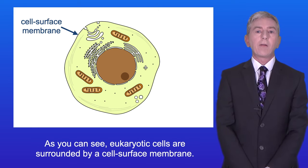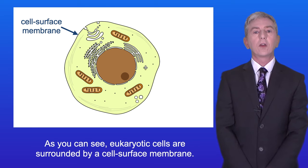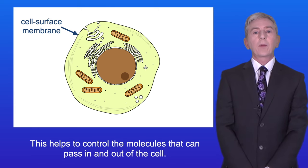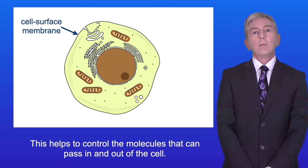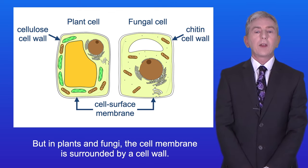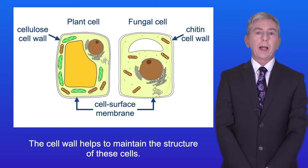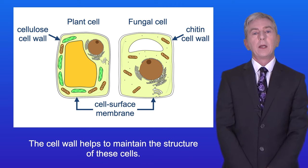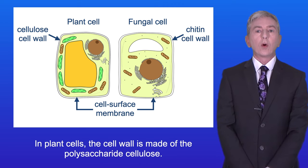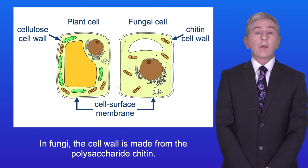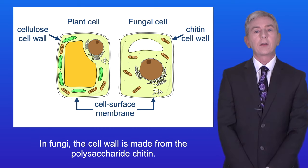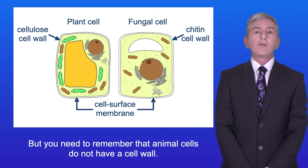Eukaryotic cells are surrounded by a cell surface membrane, and this helps to control the molecules that can pass in and out of the cell. But in plants and fungi, the cell membrane is surrounded by a cell wall. The cell wall helps to maintain the structure of these cells. In plant cells, the cell wall is made of the polysaccharide cellulose, and in fungi, the cell wall is made from the polysaccharide chitin. But you need to remember that animal cells do not have a cell wall.